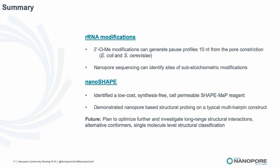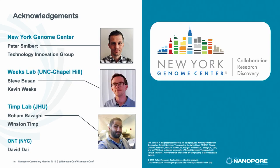In summary, for ribosomal RNA modifications we observe that 2-O methyl modifications can generate pause profiles at a registration distance from the pore constriction, and we can see substoichiometric modifications. For NanoSHAPE, we've identified a new chemical 1AI, which is not only a SHAPEMAP reagent for bulk experiments but also works in direct RNA nanopore sequencing experiments. With that I'll end and thank all the people who helped with this work.